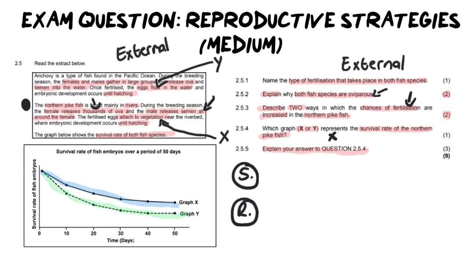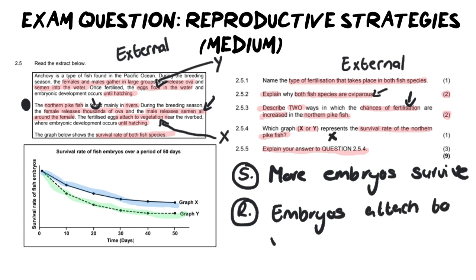So our statement is going to be that more embryos survive. And why do more embryos survive? That can now link into the vegetation because the embryos attach to vegetation, and that will increase their survival because they won't get washed away.